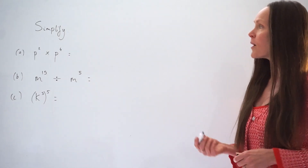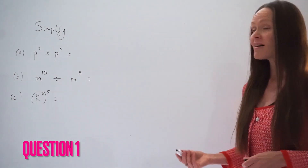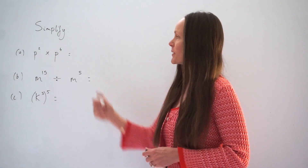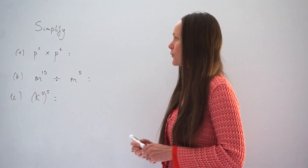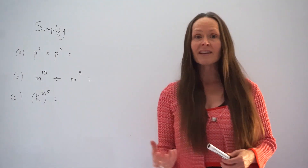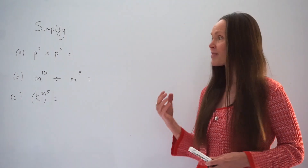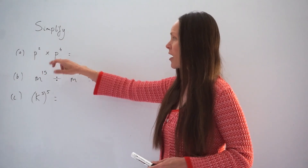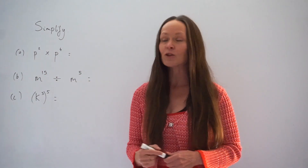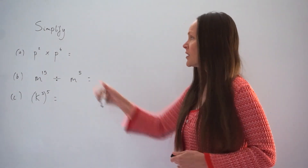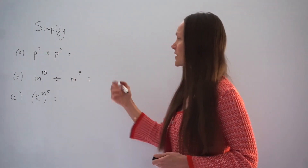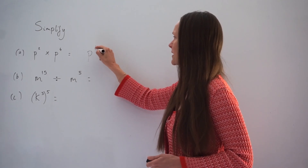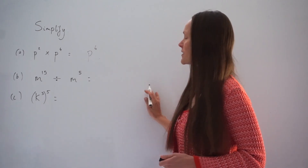In the first question we have to simplify, and part A says p squared multiplied by p to the power of 4. The rules of indices state that when you're multiplying two letters together that are the same, you must add their two powers. So 2 plus 4 is 6, so the answer to part A is p to the power of 6.